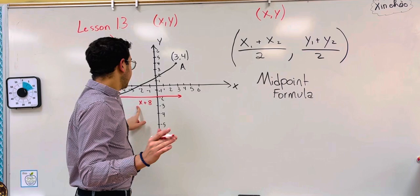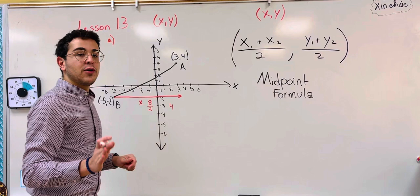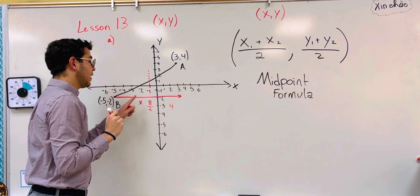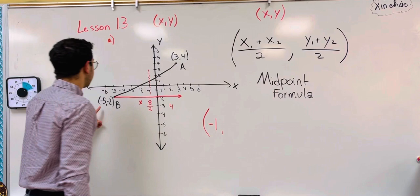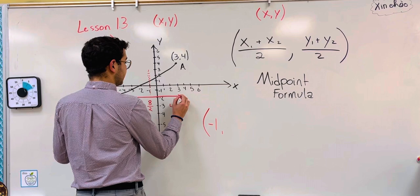X grows by eight points to get to three. Well, if we're looking for the midpoint, we're going to divide eight by two or take half of eight, which is four. And we're going to grow only by four points. So one, two, three, four. That means that the midpoint for X has to be on X equals negative one.